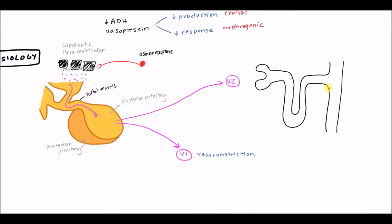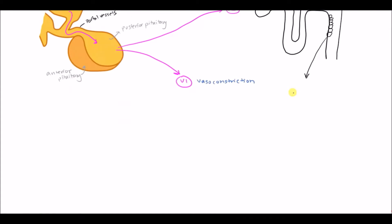ADH also stimulates the V2 receptors, which are our primary focus. Here we have the nephron: glomerulus, proximal convoluted tubule, loop of Henle, distal convoluted tubule, and collecting ducts. The collecting ducts have a number of cells, among them the principal cells. I'm going to draw a principal cell — this is where the site of action of ADH is.